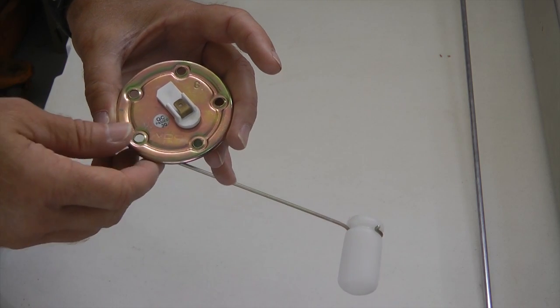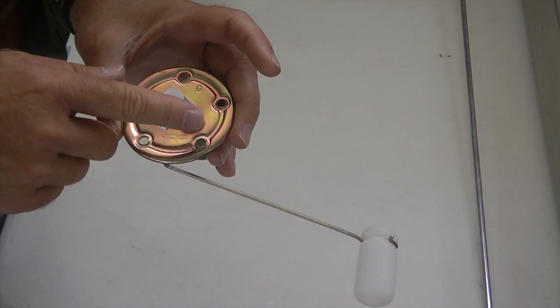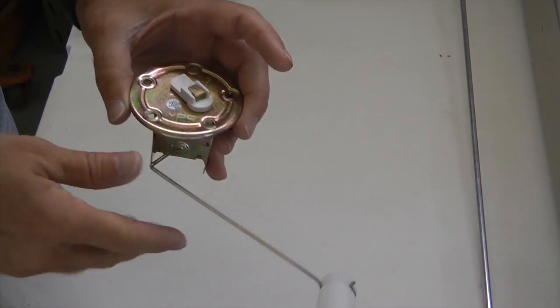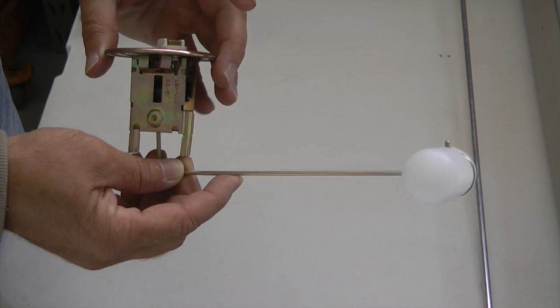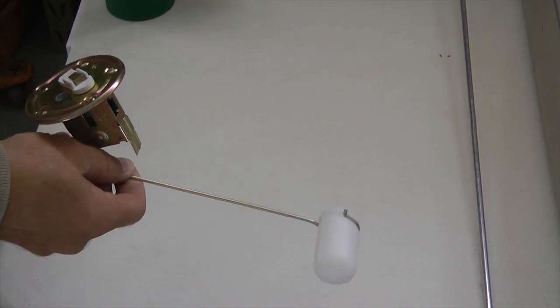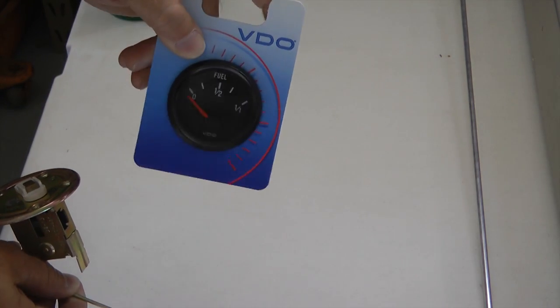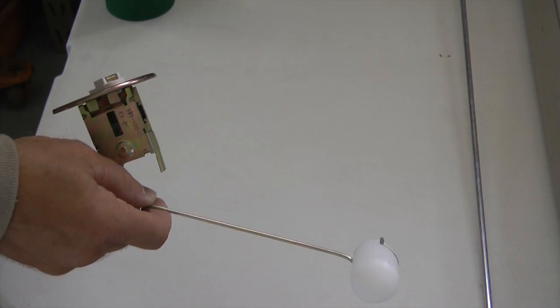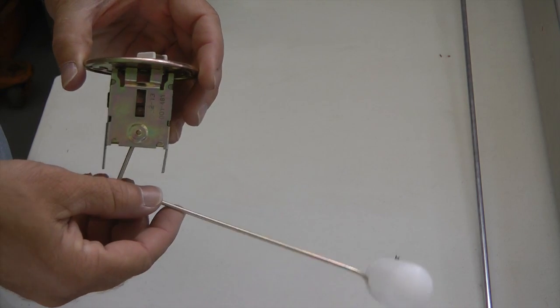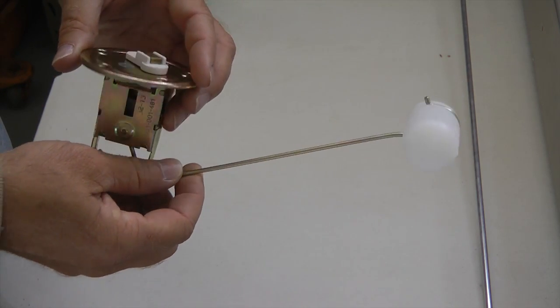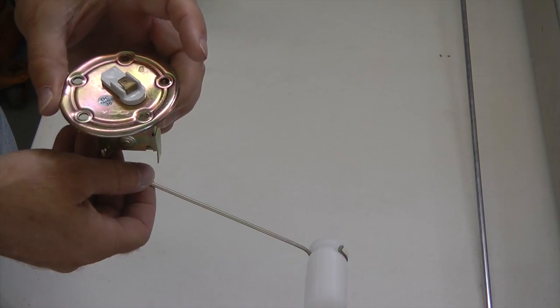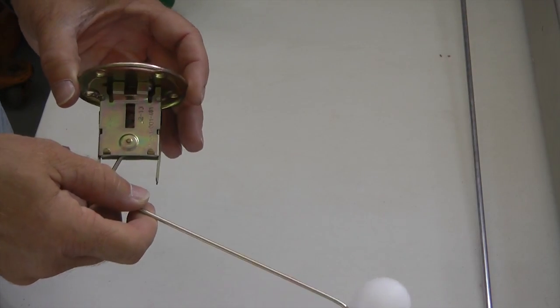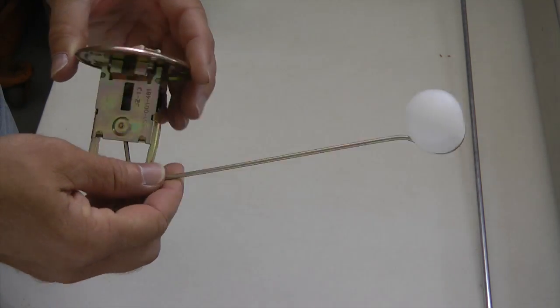This unit needs to have voltage applied to it through a gauge that is matched to this unit. In other words, you need to make sure that you buy the proper fuel gauge that matches the sender unit, because the resistance of the potentiometer may be different from one unit to another and may not match the gauge you have in mind. So always check the catalog to make sure you are getting a gauge that matches the sending unit.